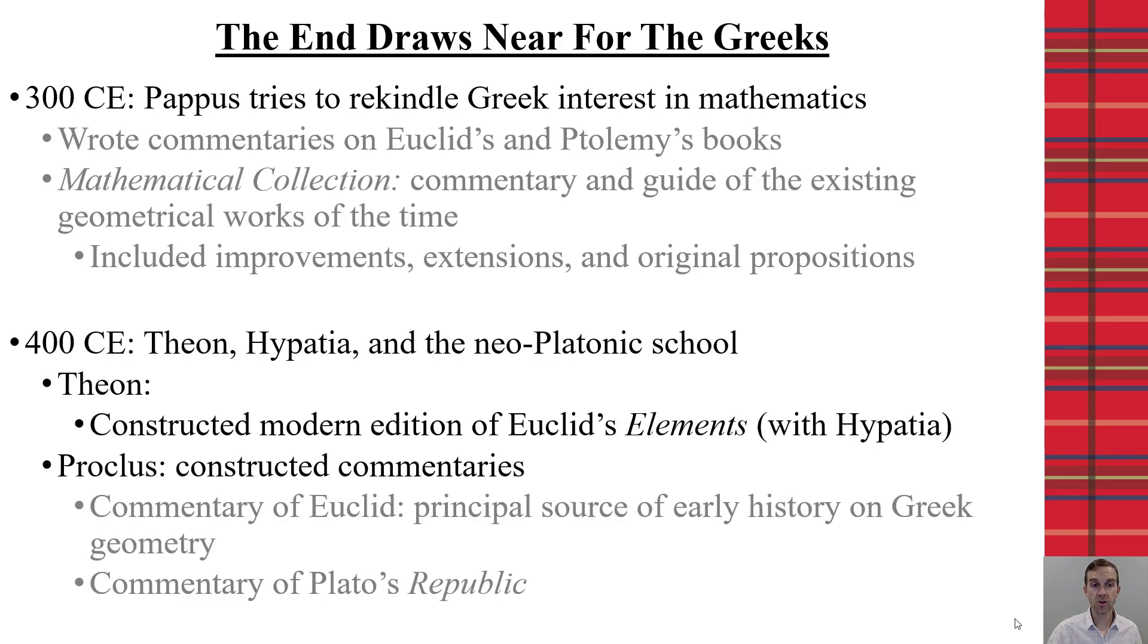Additionally, in 400 CE, so about a hundred years later, you have Theon and Hypatia in the Neoplatonic School, which is where they continued to focus on their mathematics and science. And Theon helped construct what we consider our modern edition of Euclid's elements with Hypatia, which allowed us to know what was in those original elements since there is no original copy of it.